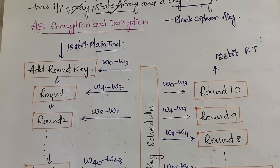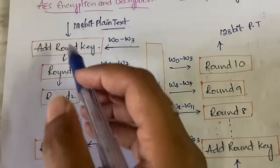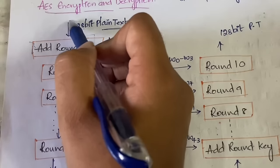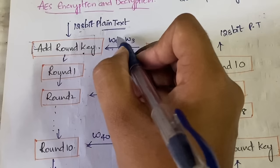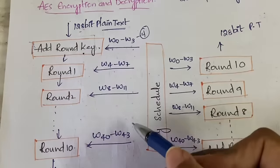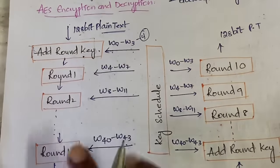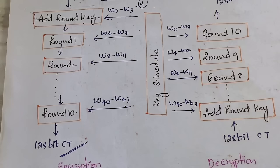I will explain encryption, and since decryption is the reverse process, you can easily understand that too. First, 128-bit plain text is sent into the first step: the add round key step. The inputs are the 128-bit plain text and four words W0, W1, W2, W3 — for each round, four words are given. From W0 to W43 there are 44 total words. With 10 rounds each taking four words, plus the initial add round key, you get 44 words total, and finally you get the 128-bit ciphertext.